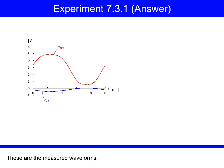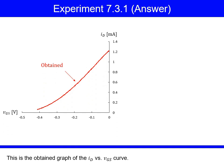These are the measured waveforms. From the saved data, the drain current ID was calculated. This is the obtained graph of the ID versus VGS curve.